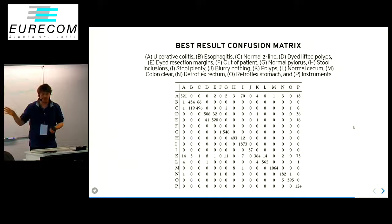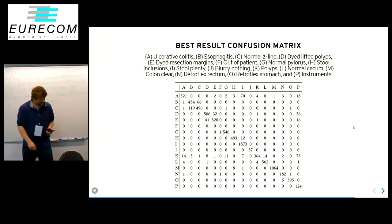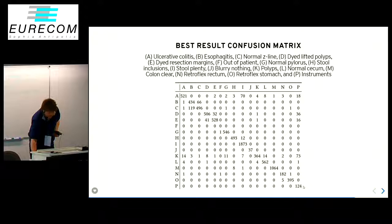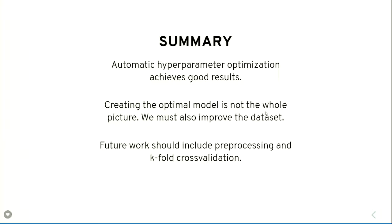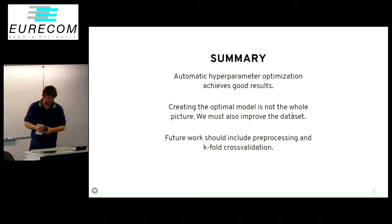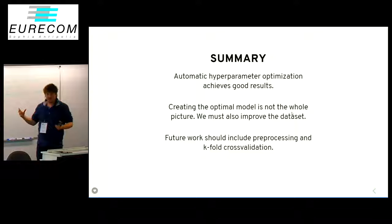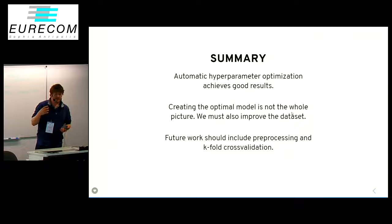This confusion matrix from the best run shows what others have already observed — the esophagitis class and the normal Z-line are confused. I didn't use the instrument trick that others have done, so I didn't get a good result there either. Overall, hyperparameter optimization does get good results, but it didn't improve results for many methods in this case. The dataset itself is what needs to improve, and for future work I would include post-processing and cross-validation, since I only ran it once.